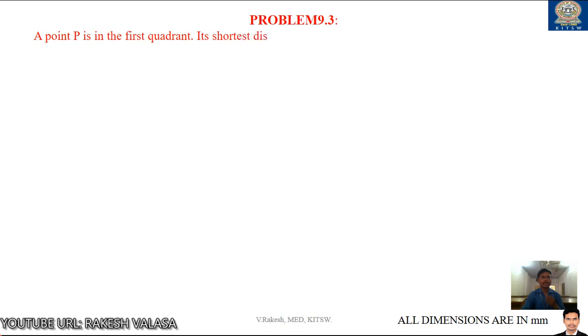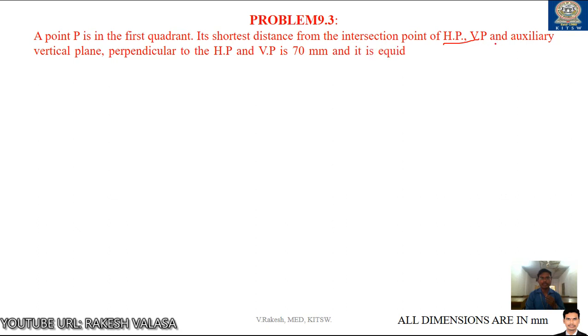A point P is in the first quadrant. Its shortest distance from the intersection point of HP, VP and auxiliary vertical plane perpendicular to HP and VP is 70 mm. It is equidistant from principal planes. Draw the projections of point and determine its distance from the HP and VP.